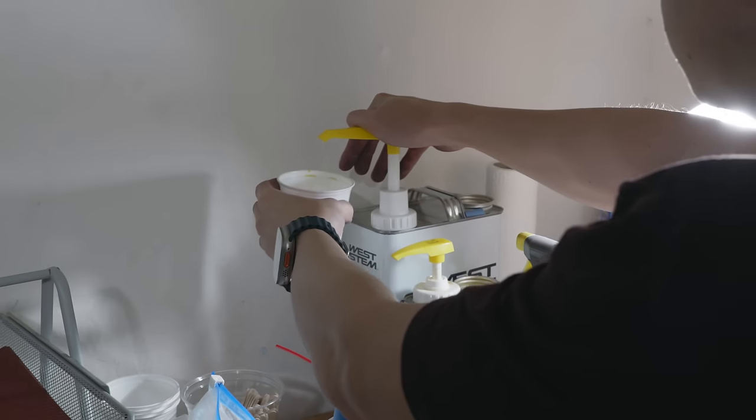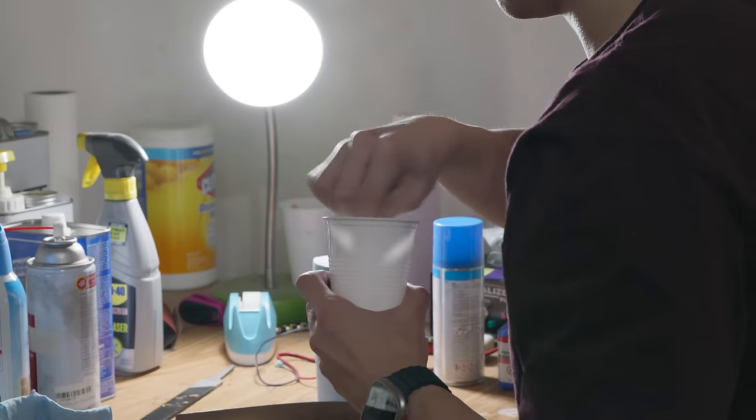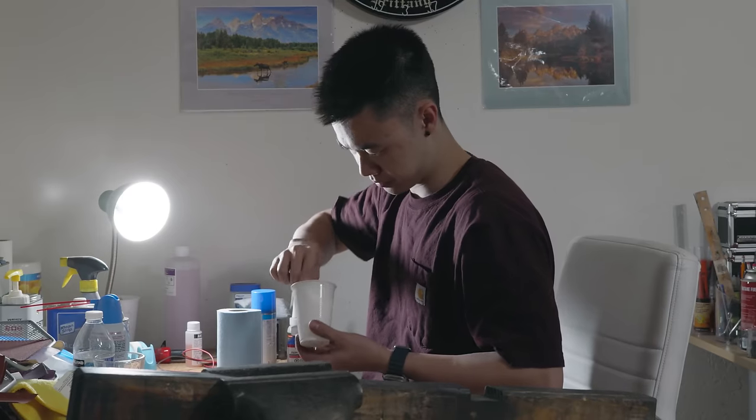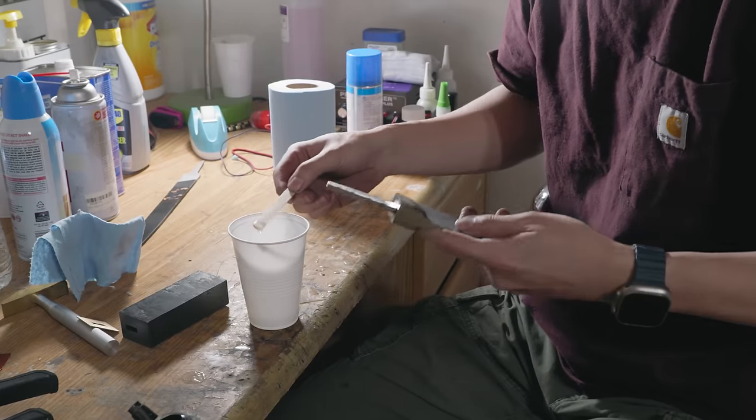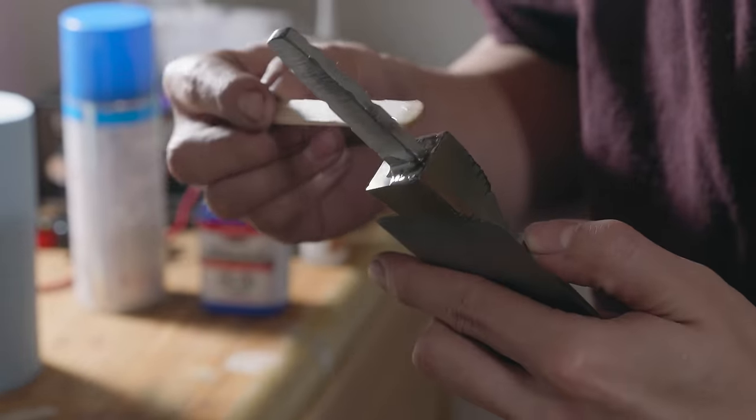I mentioned in an early video that whenever I went to go mix epoxy, I would have to do a full pump of both, meaning that I would have a lot of excess left over. Someone commented that there were lines that I could pump, like half a pump for one and half a pump for the other, but I, for the life of me, can't find those lines. So either the person commenting lied to me, or I'm blind.